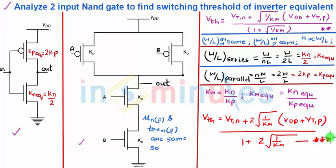VOL, VIH, VOH or the switching threshold and then just substitute in that the value of KR to KR equivalent which is nothing but KN equivalent by KP equivalent and whatever final expression you get is the final value.